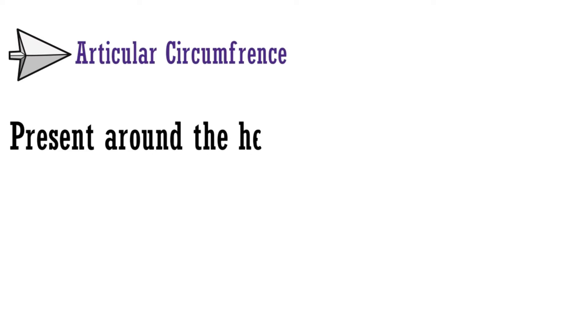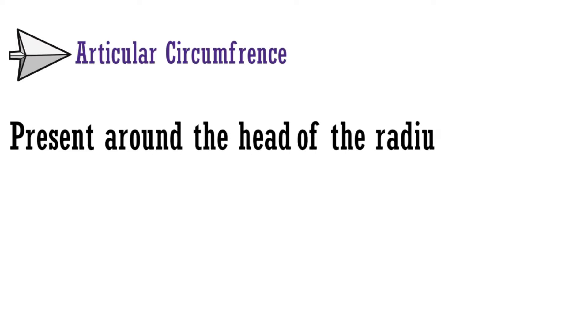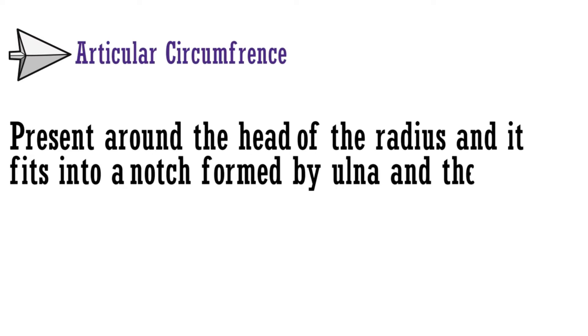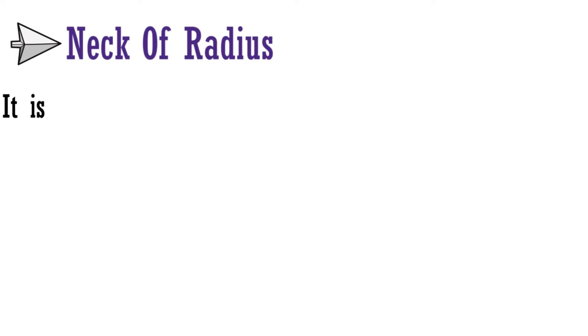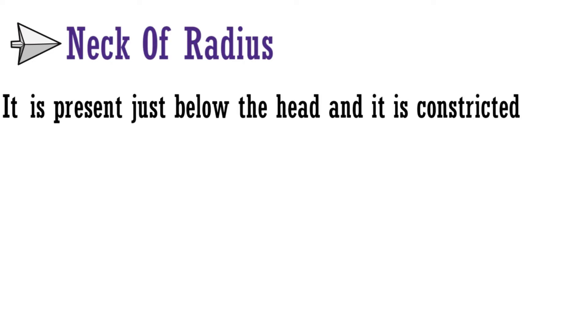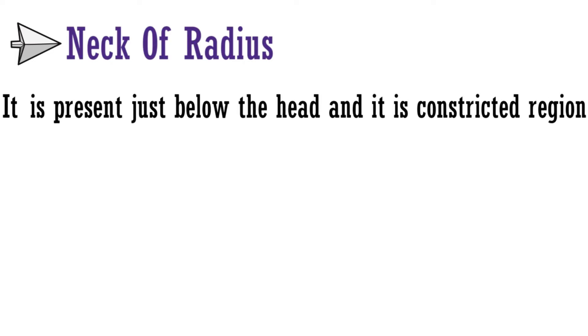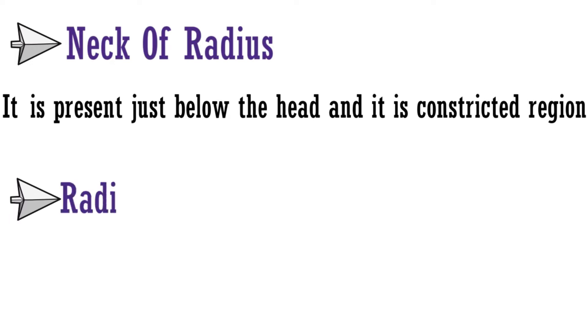The next part is the articular circumference, which is present around the head of the radius and fits into a notch formed by the ulna and the annular ligament. The third anatomical structure is the neck of the radius, present just below the head and is a constricted region.